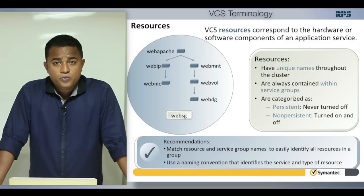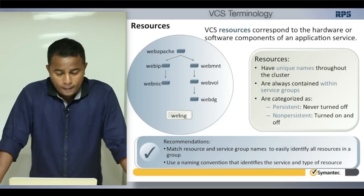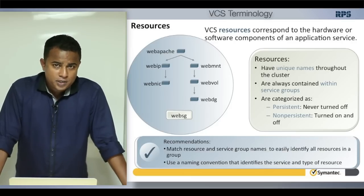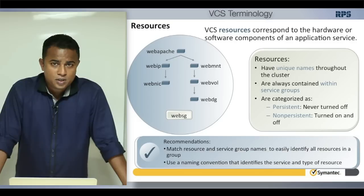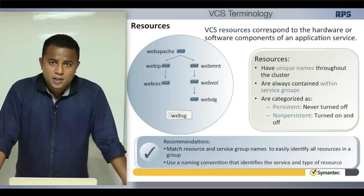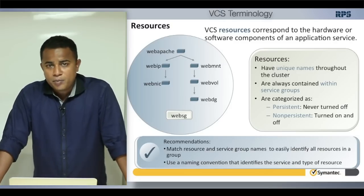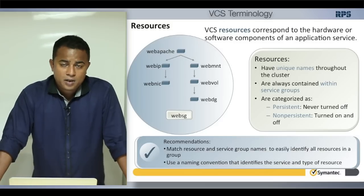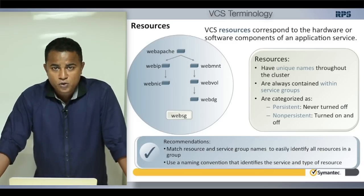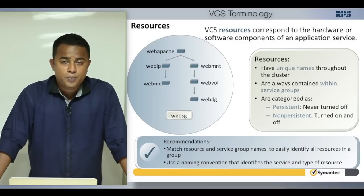Resources are part of a service group — you cannot create resources in VCS without first creating a service group. There are two categories of resources: persistent and non-persistent. For VCS to manage a resource it must be non-persistent, meaning it can be made online or offline. Some resources cannot be controlled by VCS and must be controlled directly by the operating system.